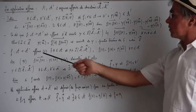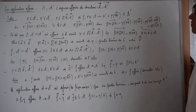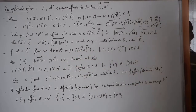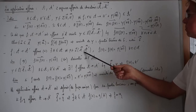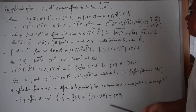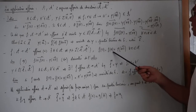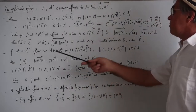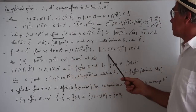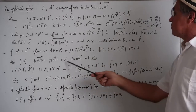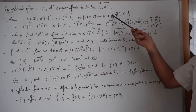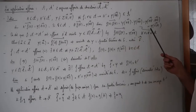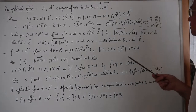Propriété : si F est une application de A vers A', elle est affine si et seulement s'il existe A un point de A et Φ une application linéaire de la direction de A vers la direction de A', vérifiant F(M) = F(A) + Φ(AM) quel que soit M appartenant à A. Démonstration : si F est affine, on a cette relation, et donc ça se traduit comme ça. Pour la réciproque, c'était l'exemple de l'introduction, où on avait démontré que le vecteur F(M)F(P) est toujours égal à Φ(MP), donc F est affine.